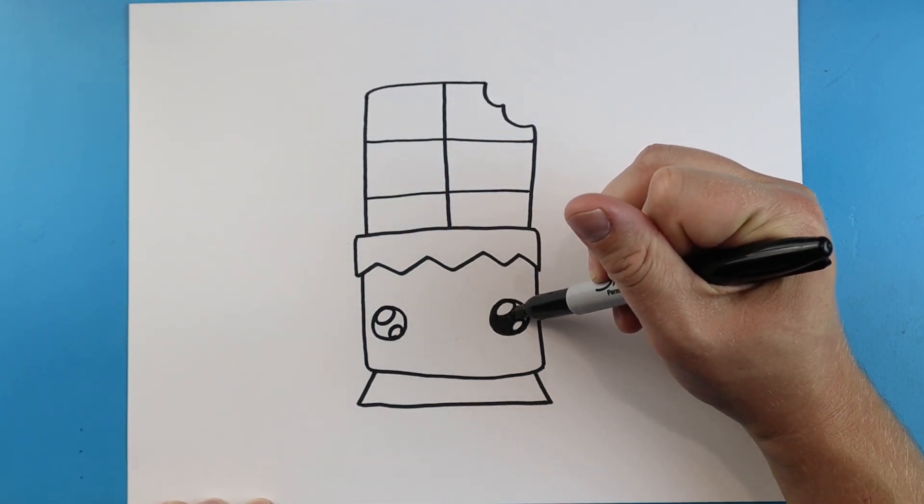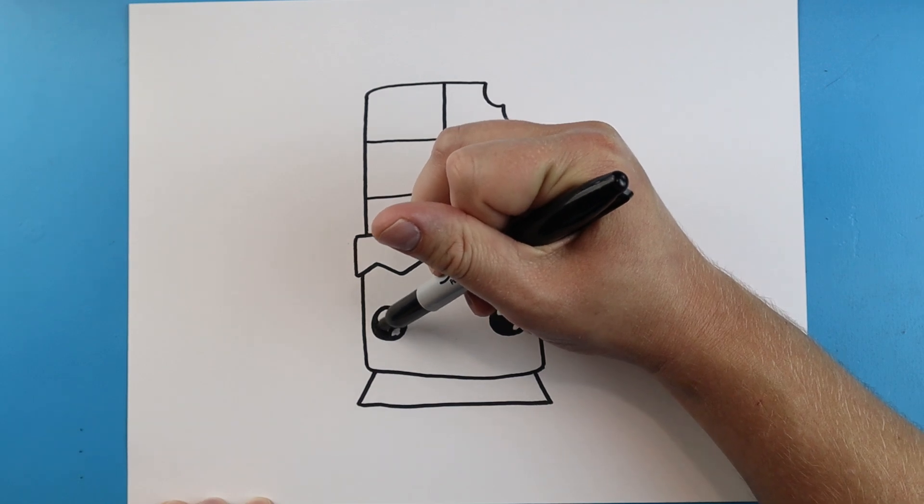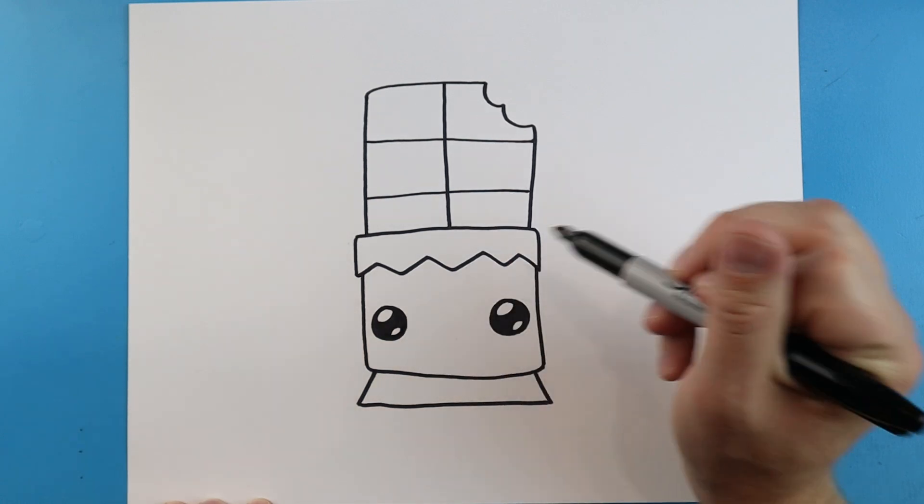Once you've done that just go ahead and color these little spaces in between. We just want to fill these in real quick. This kind of gives it the shape of a cute eye.